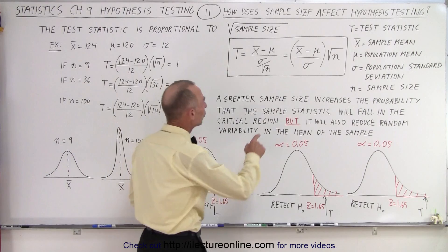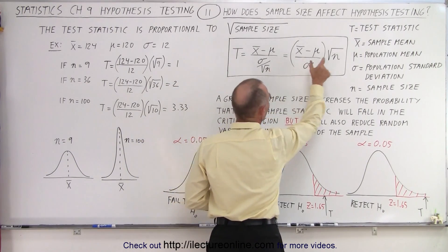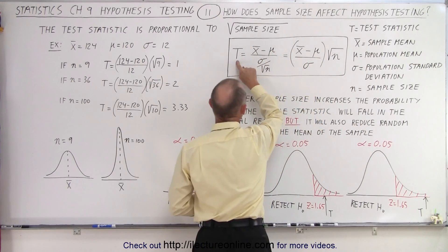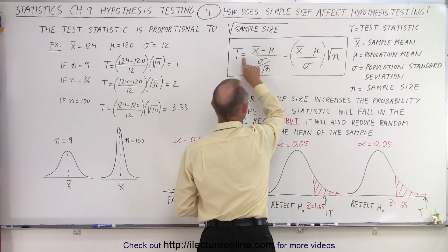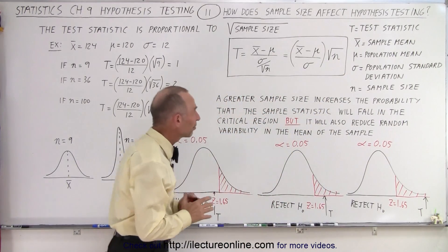Now if we rewrite it, notice we can take the square root of the sample size and move it to the right.